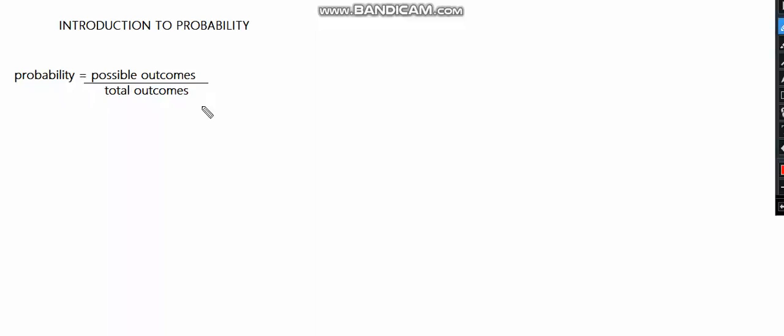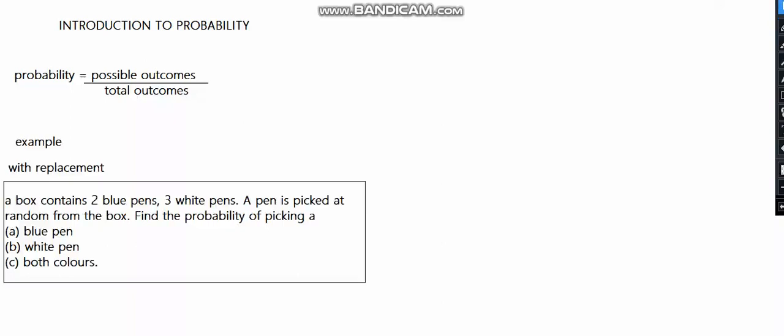Let's see an example. This is with replacement: a box contains 2 blue pens and 3 white pens. A pen is picked at random from the box. Find the probability of picking (a) a blue pen, (b) a white pen, (c) both colors.